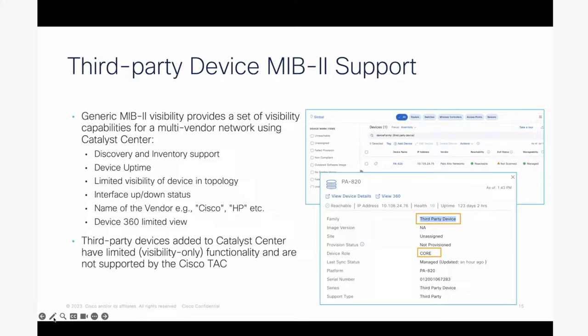When a third-party device is added, you have some base automation features — discovery and inventory support, limited visibility of device health, interface status, and vendor information. In Assurance or Device 360, the view is limited. Keep in mind that if you run into an issue with third-party devices, Cisco does not support or troubleshoot those devices — you need to open a ticket with the appropriate vendor.